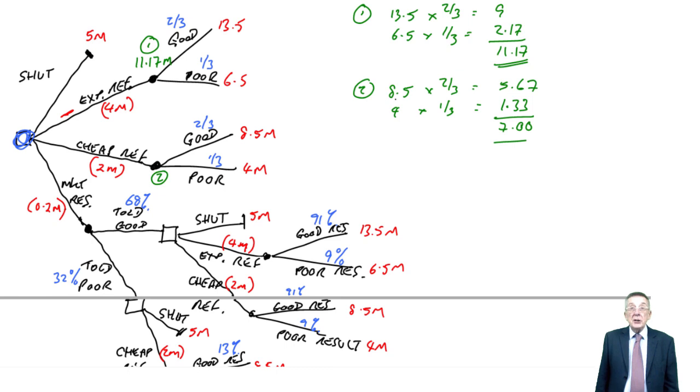But it does mean that if we choose cheap, we will pay out two, and we'll get back an expected seven. So, a net five million, seven minus two. What about the next one, though? Market research.